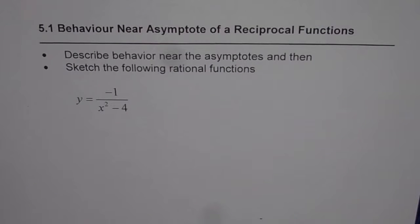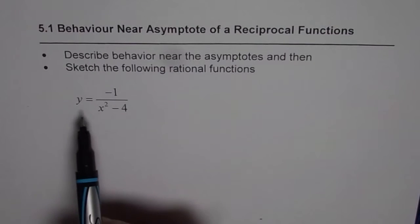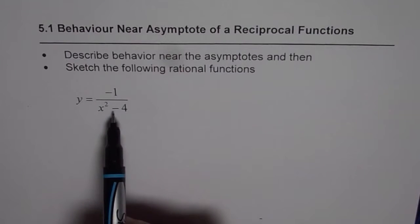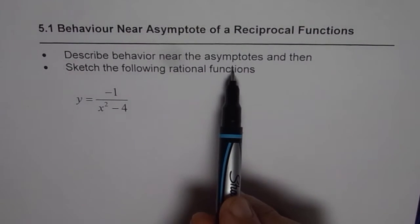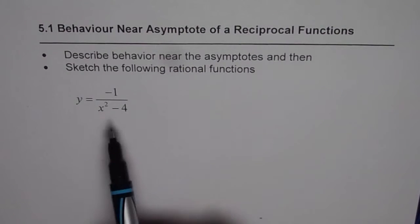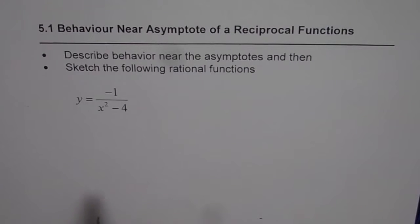I am Anil Kumar and in this video we will try to understand behavior near the asymptote of a rational function. It is a very important characteristic which helps us to quickly sketch the correct graph for a rational function. Here is an example: y equals minus 1 divided by x squared minus 4. We need to describe behavior near the asymptote and then sketch this rational function.